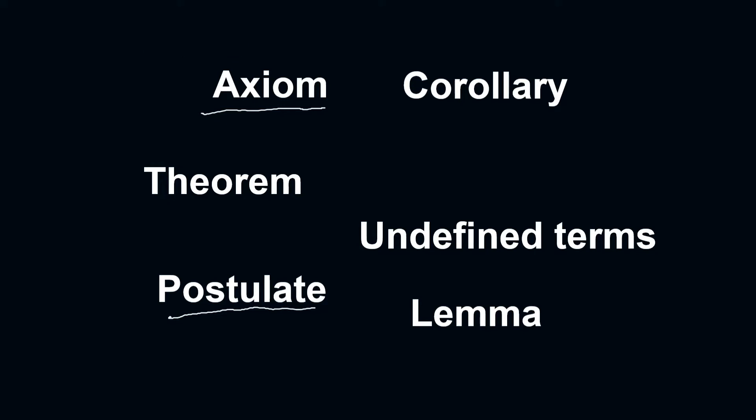Theorem needs to be proven. Corollary and lemma are in fact theorems also, and they are named as such depending on how you present these theorems in text. Corollary is a consequence of the theorem. Lemma, on the other hand, needs to be established before you are going to present a theorem which is dependent on that particular lemma.